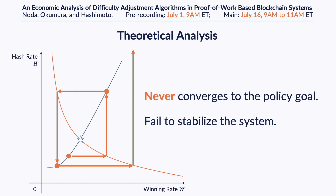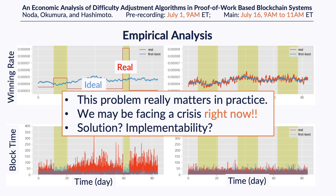Our theory shows that under a certain condition, Bitcoin's algorithm fails to stabilize the system. Our empirical analysis suggests that this design problem really matters in practice. In our paper, we also propose a possible solution and analyze its implementability.